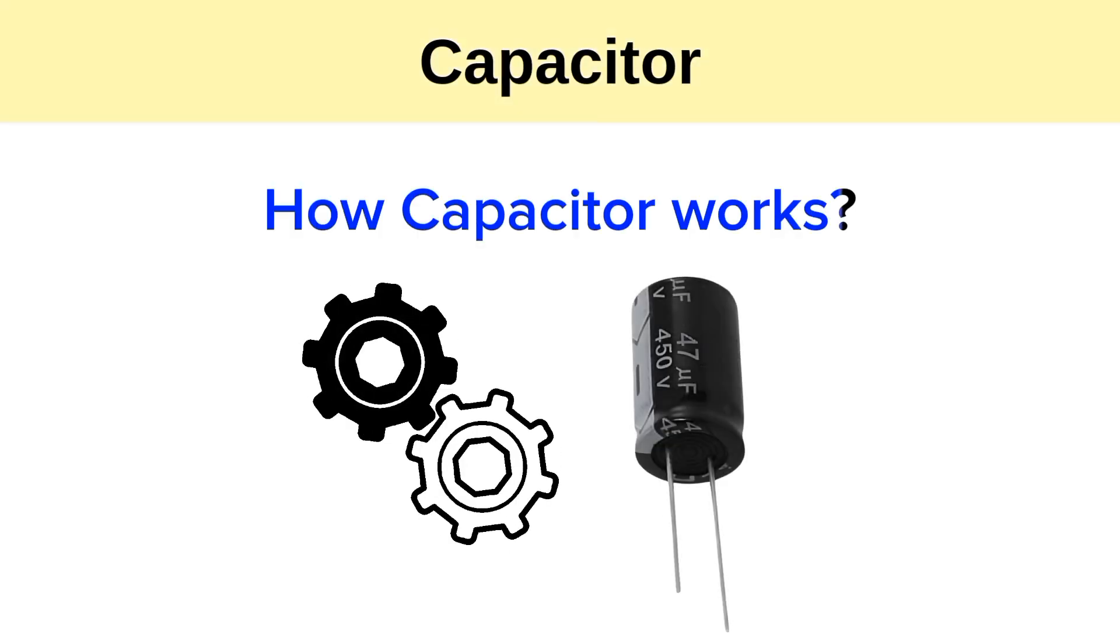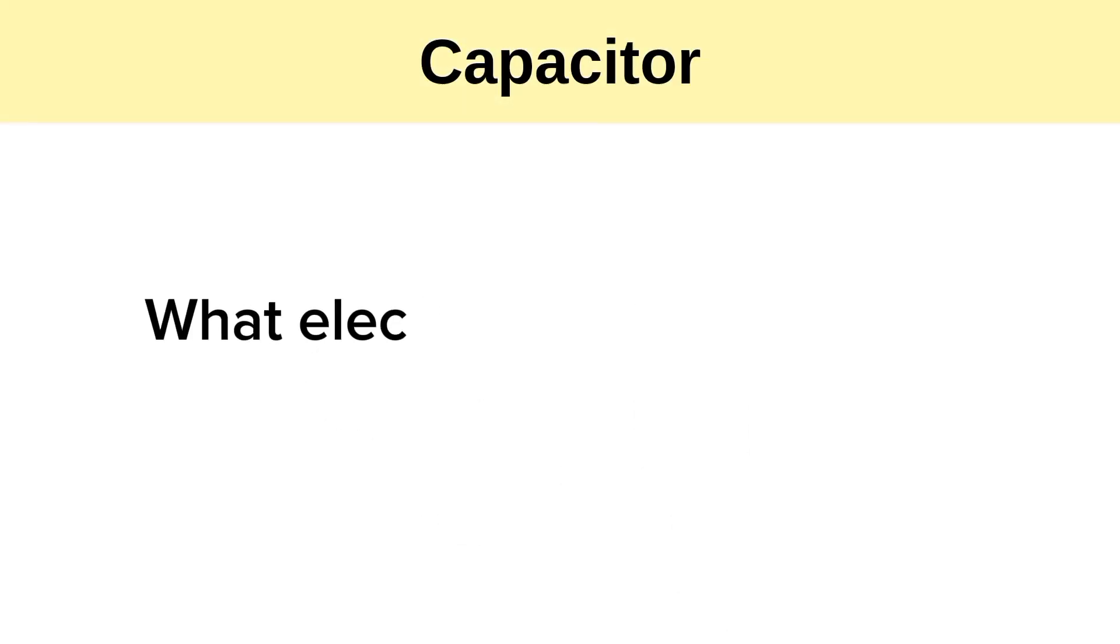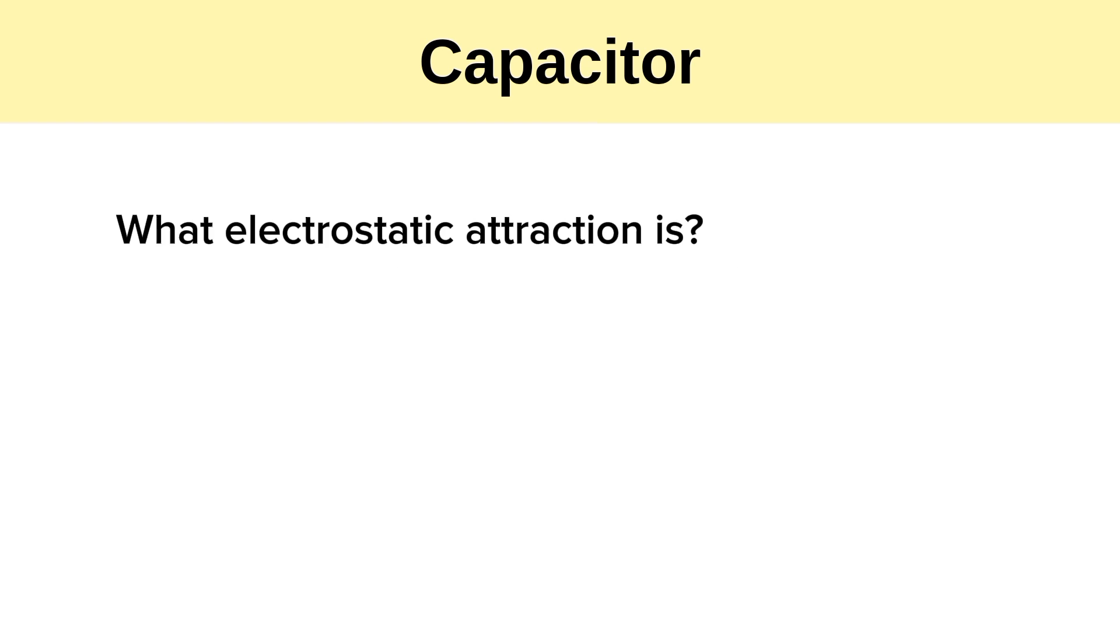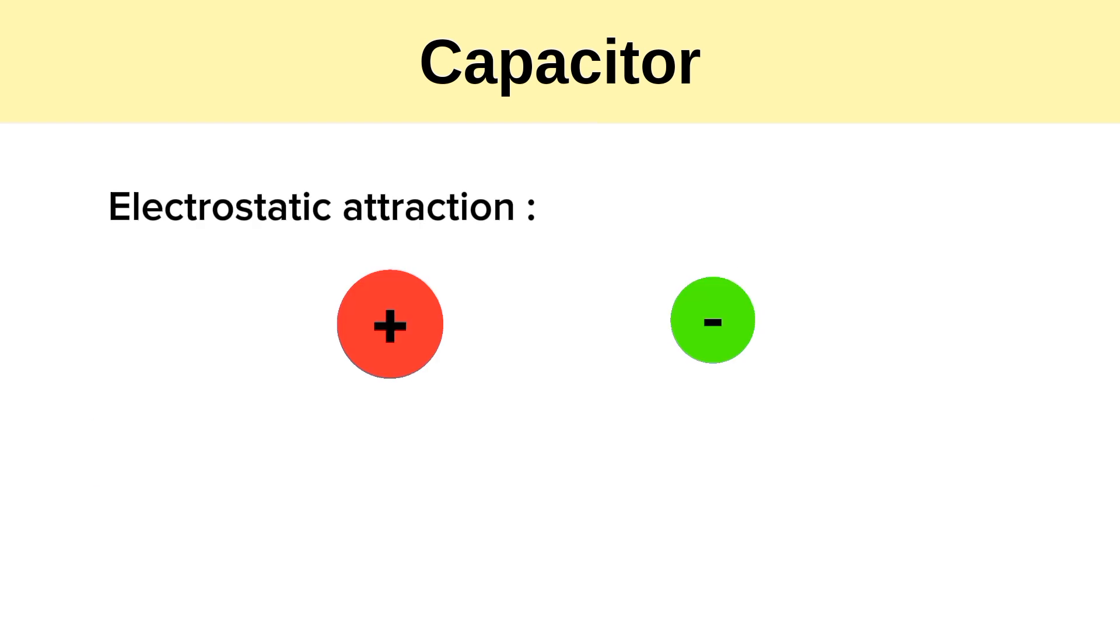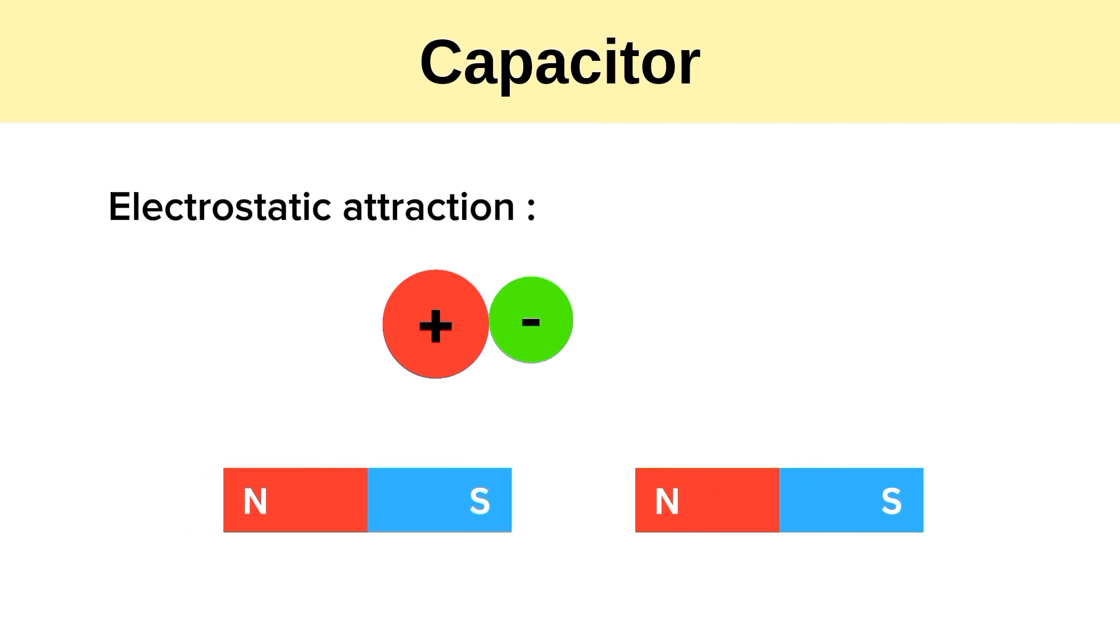Now let's see how the capacitor works. But before we delve into that, we need to understand what electrostatic attraction is. Electrostatic attraction pulls oppositely charged particles together, just like magnets. When the north and south poles are close to each other, they are attracted, and when the same poles are close to each other, they are repelled.